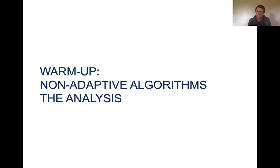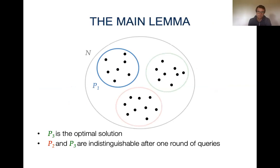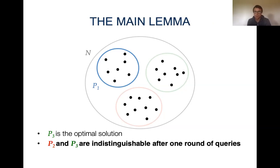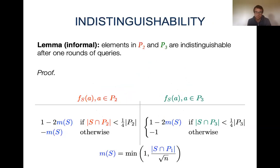Now I would like to discuss the analysis. There are two properties we want to show: that P3 is the optimal solution, and that elements in P2 and P3 are indistinguishable after one round of queries. The second property is the main lemma. For this talk, I will show that for a random partition, elements in P2 and P3 have the same marginal contribution to any queried set S.